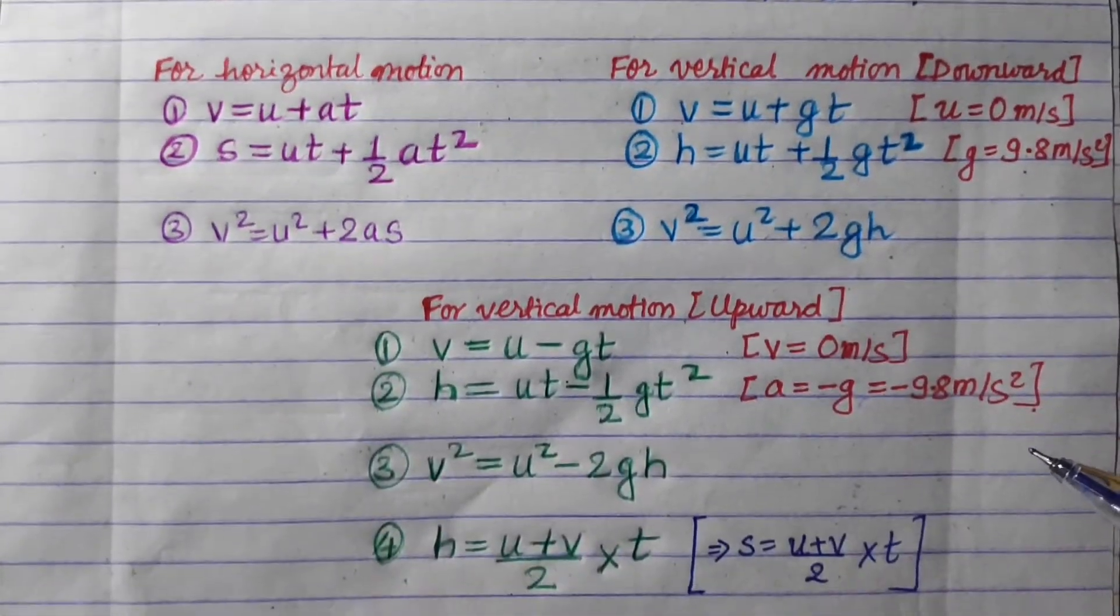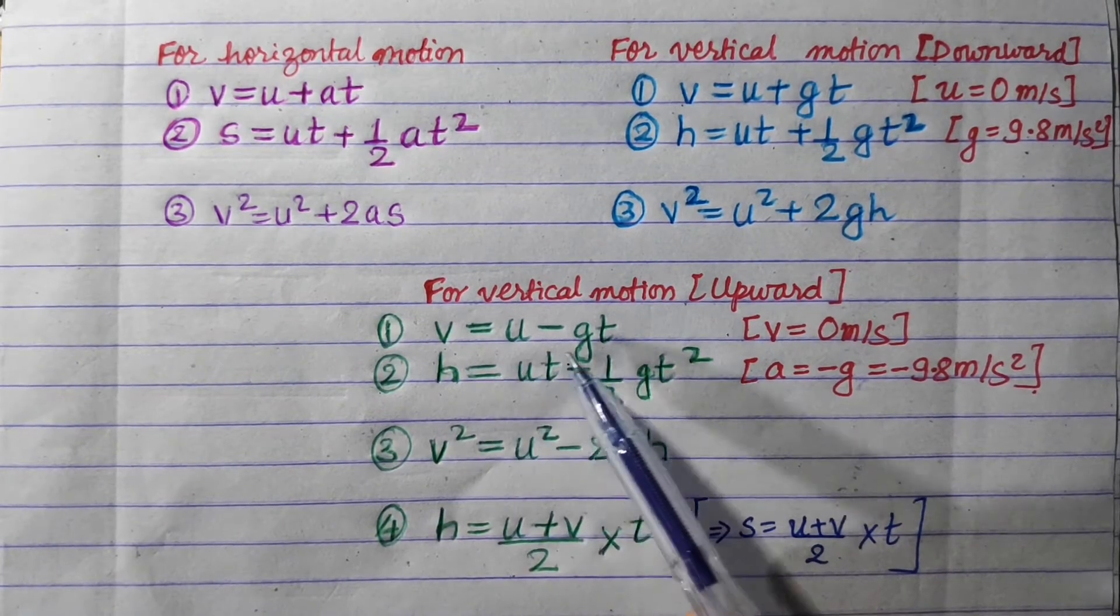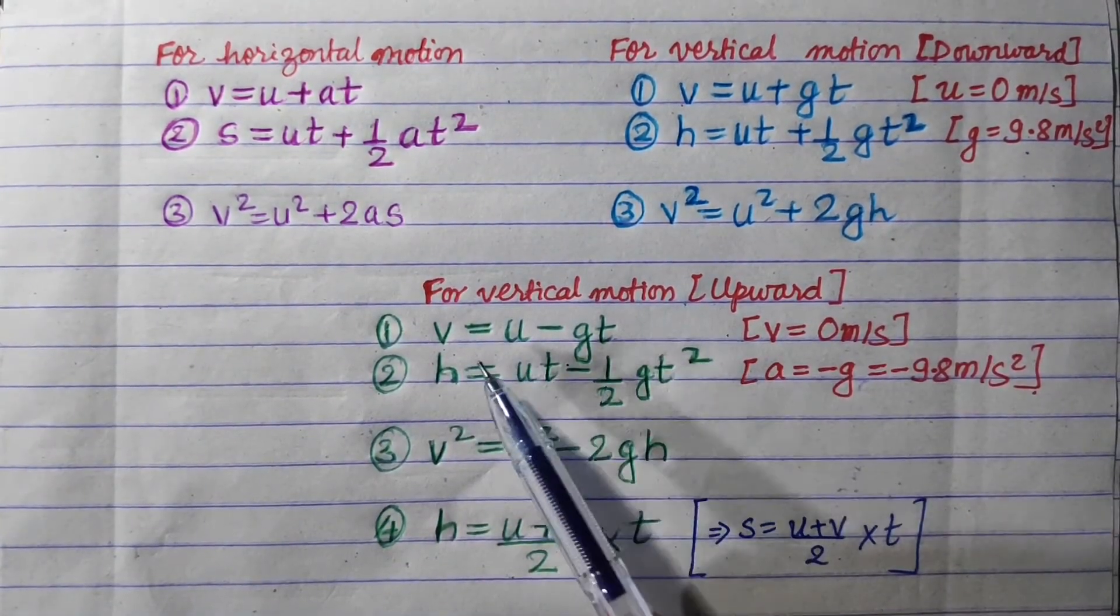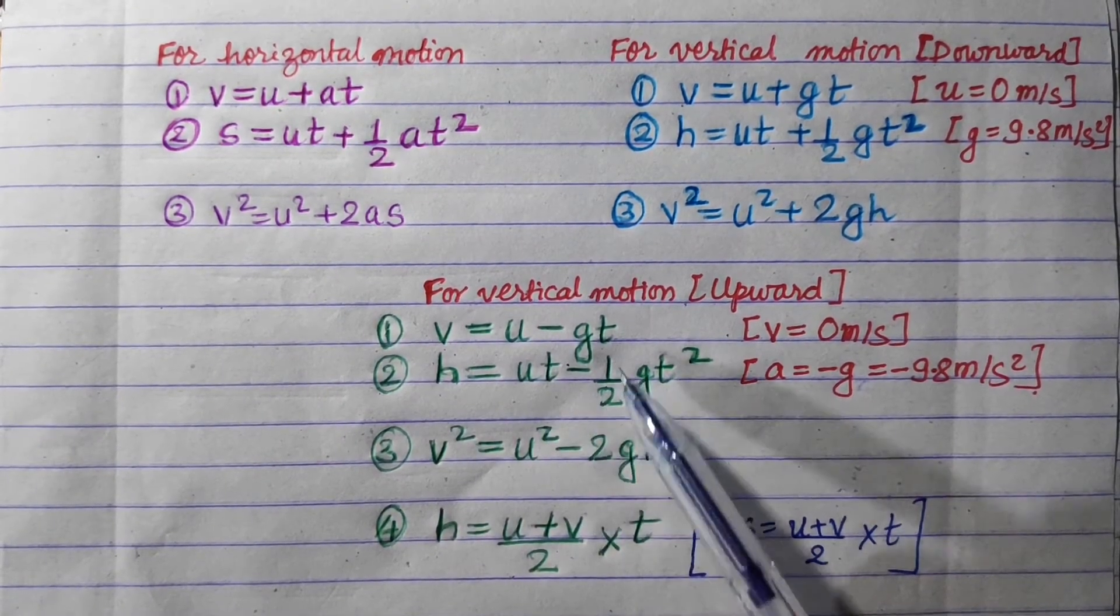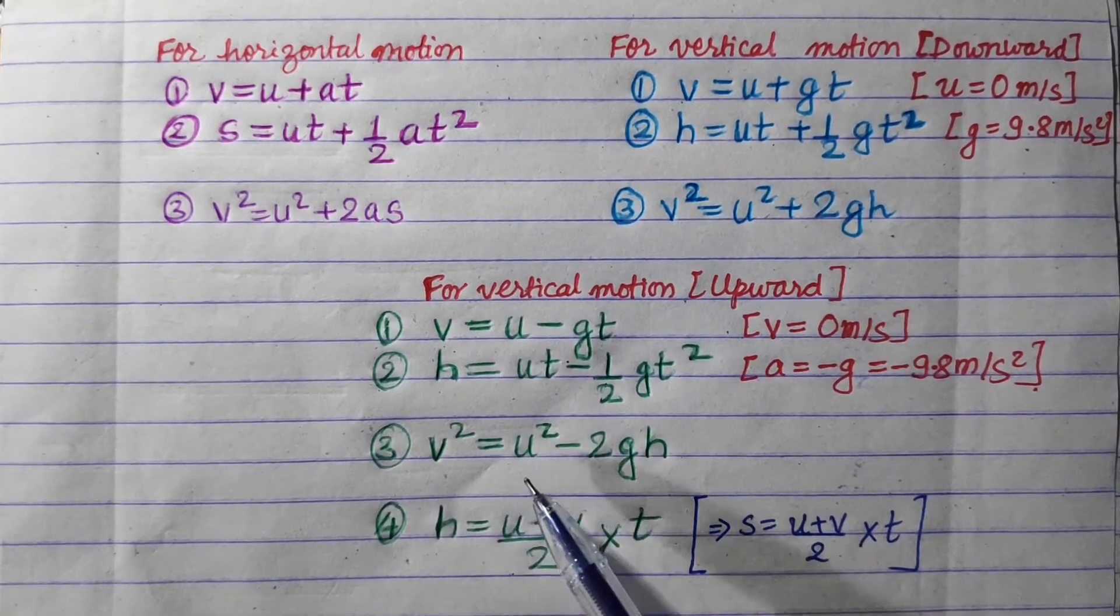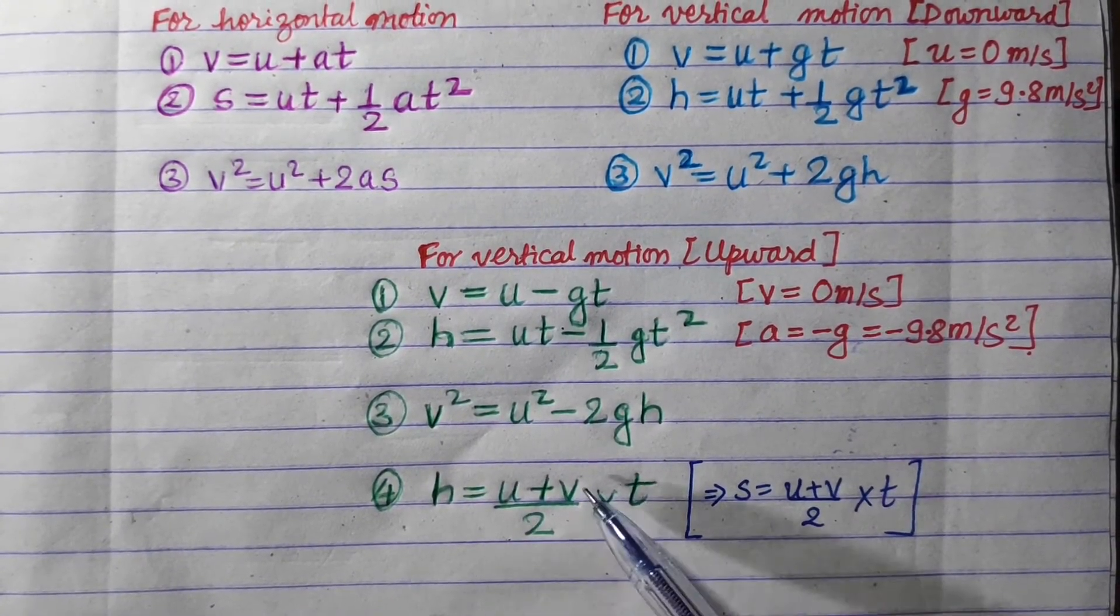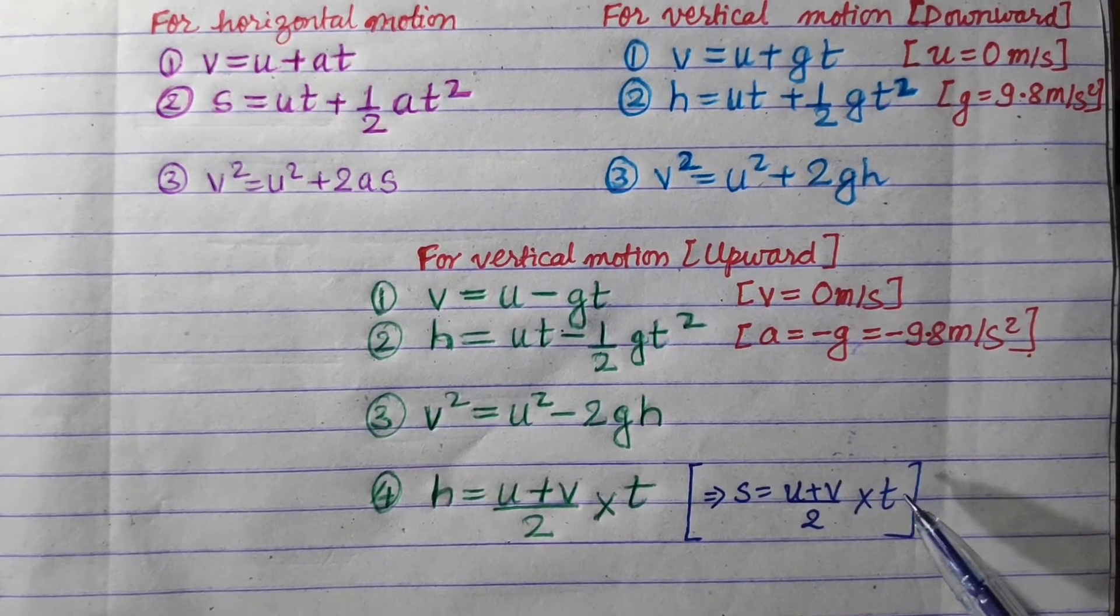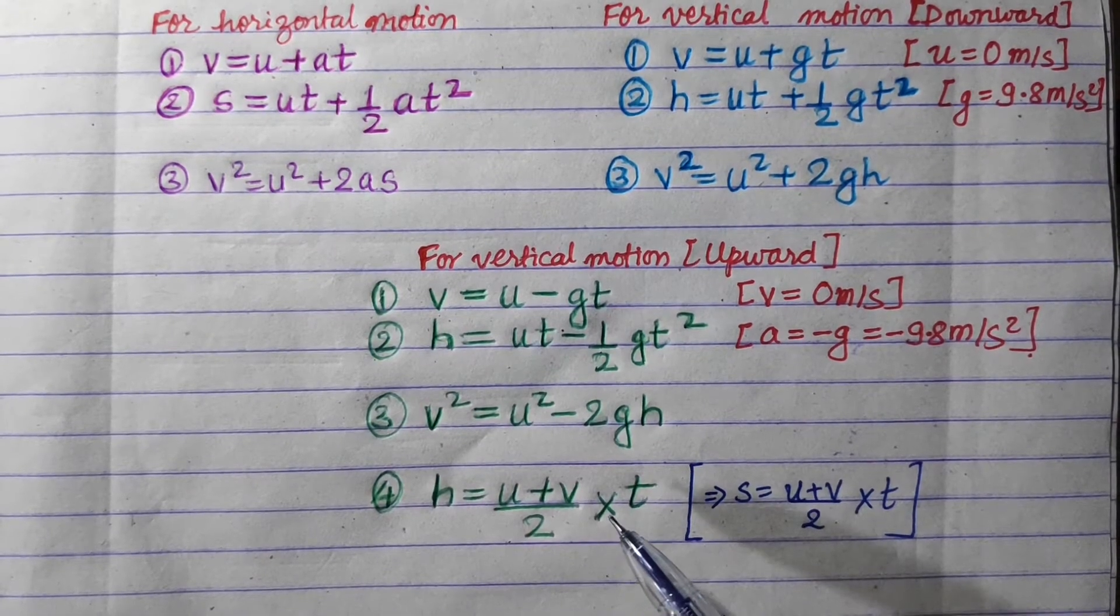For upward motion, v equals u minus gt. This is retardation, negative acceleration due to gravity. h equals ut minus half gt squared. v squared equals u squared minus 2gh. And we frequently use the formula h equals u plus v upon 2 into t. Mainly, a is replaced by g, and s is replaced by h for vertical motion.